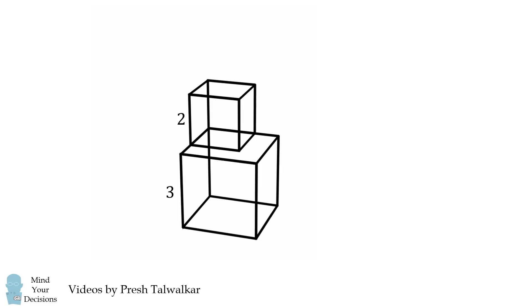Mind Your Decisions, I'm Presh Talwalkar. A cube with an edge length of 3 is stacked with a cube with an edge length of 2 and a cube with an edge length of 1 as shown, where two of their faces are aligned.